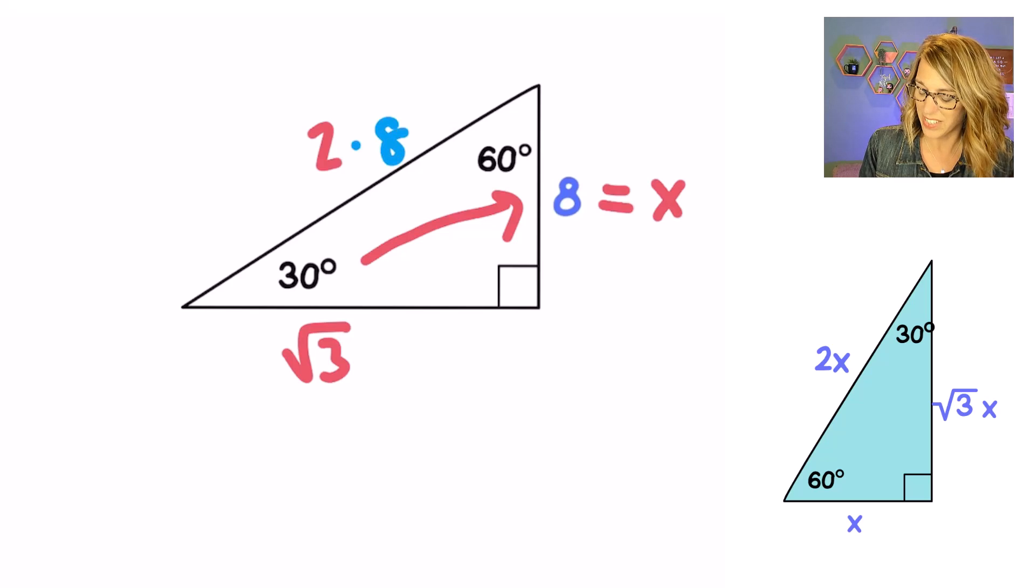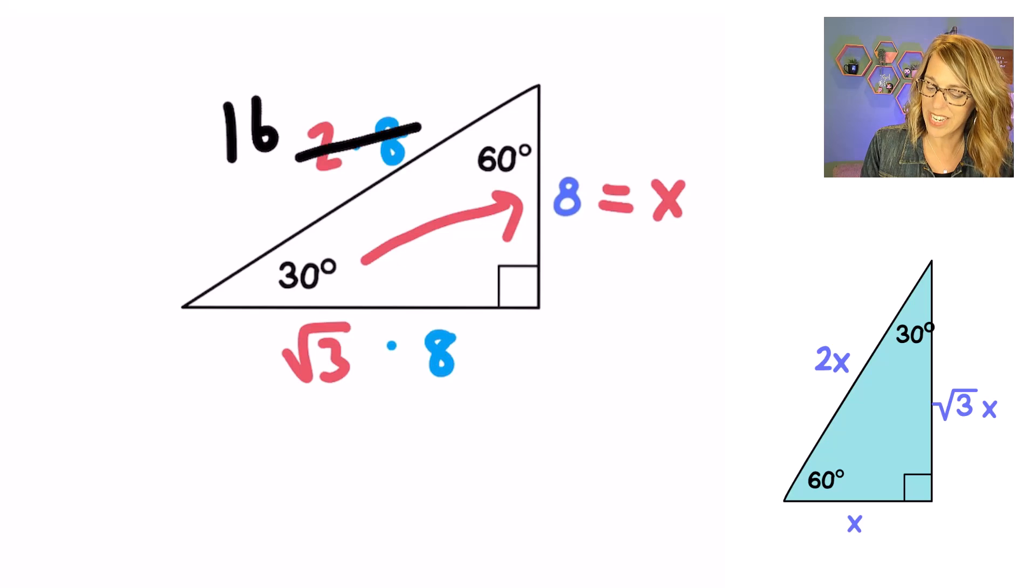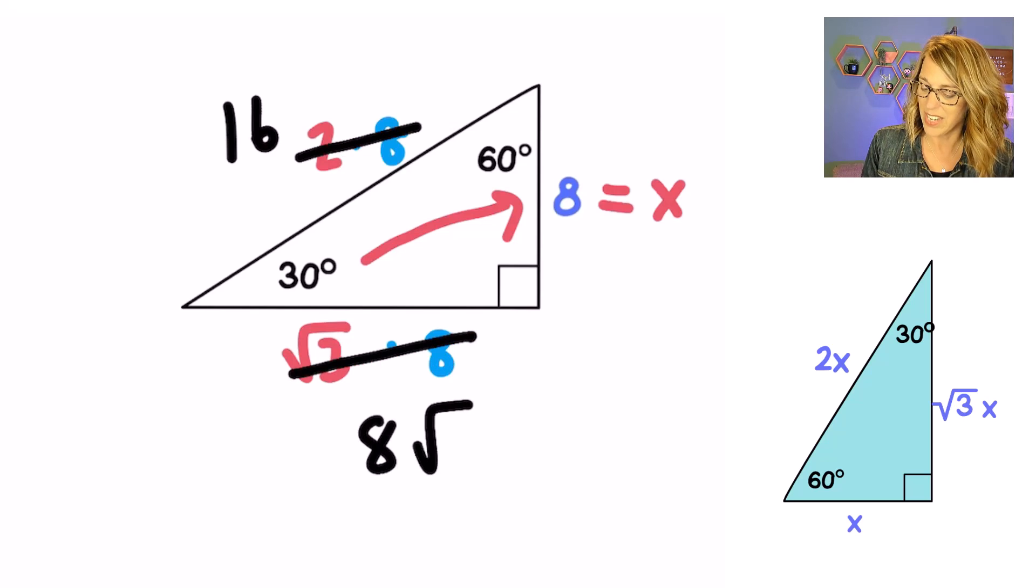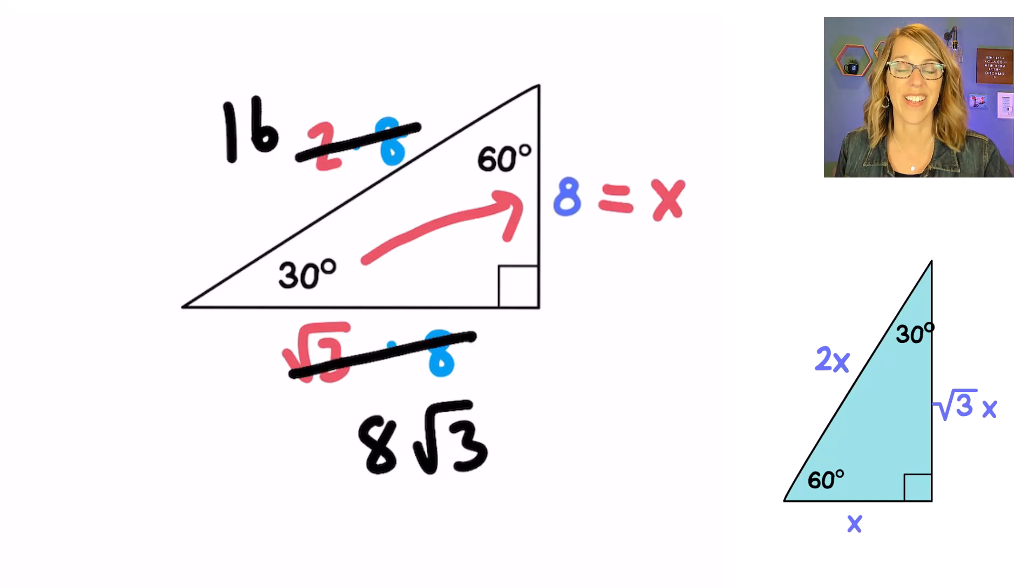So I get 2 times 8 radical 3 times 8 and I can clean those up just a little bit. So I've got 16 on the hypotenuse. Let's write that 8 first and I've got 8 radical 3 on the other leg.